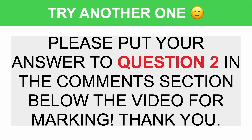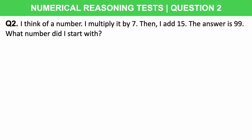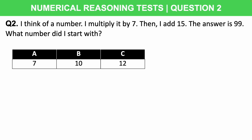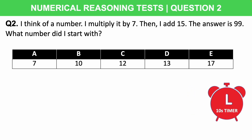Now try a question yourself — put your answer to question 2 in the comment section below for marking. I get back to every person who comments. Question 2: I think of a number, I multiply it by 7, then I add 15, the answer is 99. What number did I start with? Options: A) 7, B) 10, C) 12, D) 13, or E) 17. You have 10 seconds — remember you'd get 15 seconds in the real test, but over-preparing is always better than under-preparing.